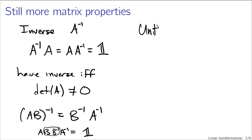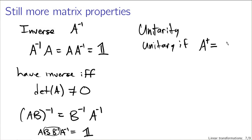One last property: unitarity. We describe a matrix as unitary if the Hermitian conjugate of the matrix is equal to the inverse of the matrix. Notationally, there's a lot to keep track of: we have dagger, star, tilde, minus-one, and the determinant of A — and they all interact in ways you need to keep straight. But unitary matrices will play a special role in quantum mechanics.